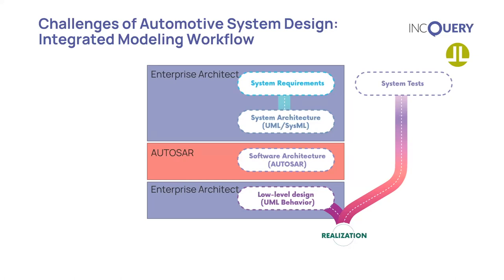We assume that our listeners are familiar with the software development V-model — a huge percentage of organizations apply this method worldwide. For each step in the V-model, the appropriate technology is used: EA is used for requirements and high-level design, which most probably contains both hardware and software elements, while AUTOSAR tools are used for capturing software architecture. UML in EA can then be used for covering detailed design, which is not covered by AUTOSAR modeling approaches.